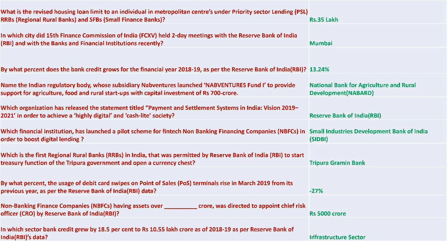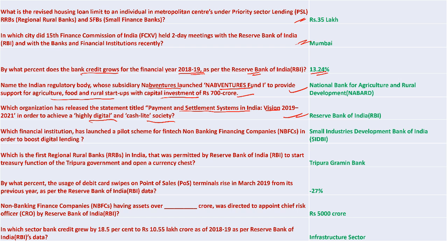The revised housing loan limit for individuals in metropolitan centers under Priority Sector Lending is 35 lakhs. The 15th Finance Commission held a two-day meeting with RBI and financial institutions in Mumbai. Bank credit grew 13.24% in the financial year 2018-19 as per RBI. NABARD's subsidiary Nabventures launched Nabventures Fund One to provide support for agriculture, food, and rural startups with a capital investment of 700 crore. RBI released 'Payment and Settlement Systems in India: Vision 2019-21' to achieve a highly digital, cash-light society.